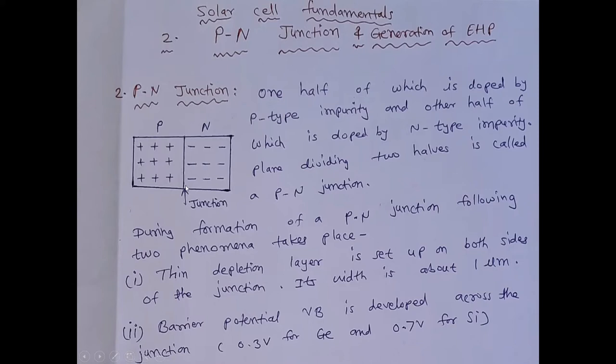So, this plane dividing these two halves is called junction, it's called P-N junction. Now friends, during formation of this P-N junction, following two phenomena takes place. First, thin depletion layer is set up on both sides of the junction, and its width is about one micrometer.